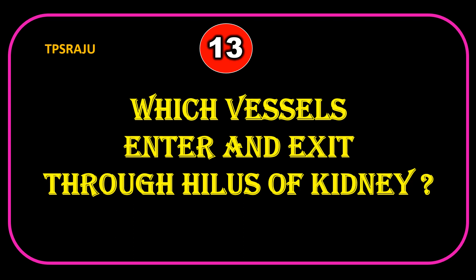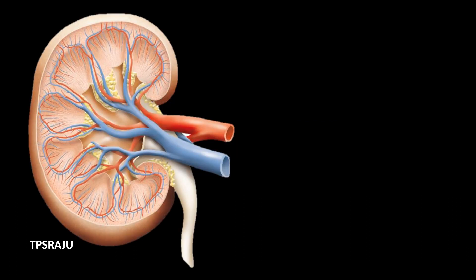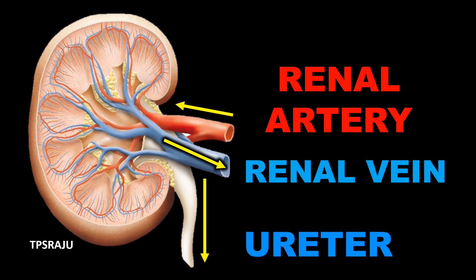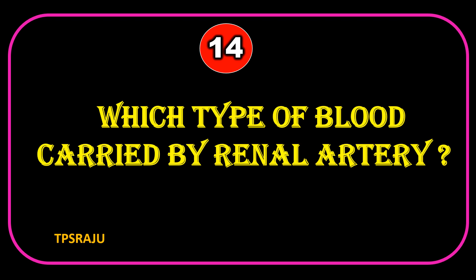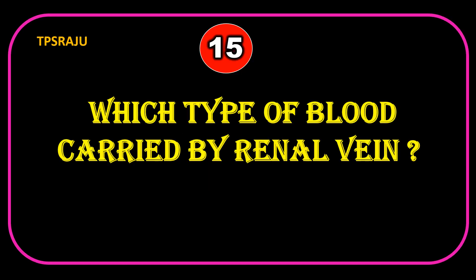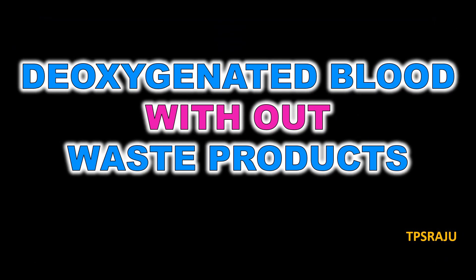Which vessels enter and exit through the hilus of the kidney? Renal artery enters into the kidney; renal vein and ureter exit from the kidney. Which type of blood is carried by renal artery? Oxygenated blood with waste products. Which type of blood is carried by renal vein? Deoxygenated blood without waste products.